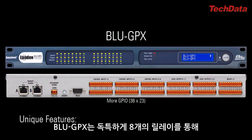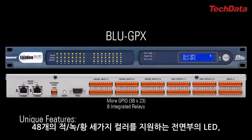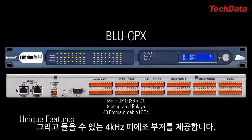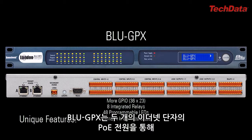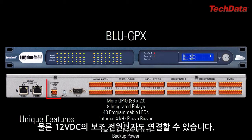The BLU-GPX also uniquely offers eight integrated relays which can be told to physically move to open or close a circuit, 48 programmable tri-color red-green-yellow front panel LEDs, and a 4 kHz piezo buzzer for audible indications. The BLU-GPX is configured, controlled, and monitored, and also optionally powered via PoE through either of the two Ethernet ports. There's also a 12-volt DC connector for backup power.